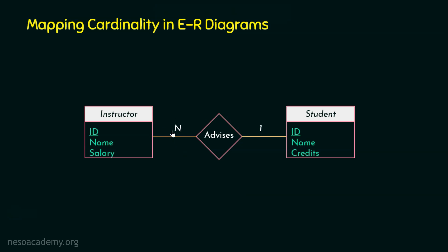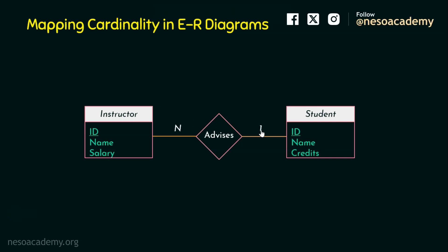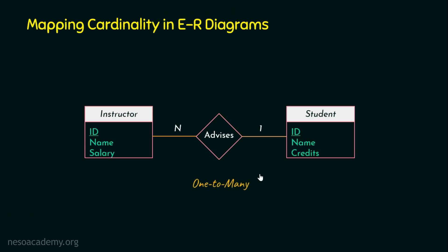The second type is one to many. When we say one to many, one will be on this side and many (n) will be on this side. With arrow notation, an arrow goes on the many side and there is no arrow on the one side. The explanation: one instructor can be an advisor for many students, but a student can have only one advisor at the maximum. Another example: one department has many faculty members.